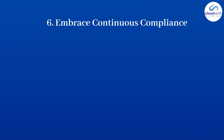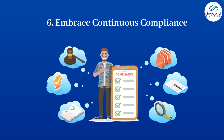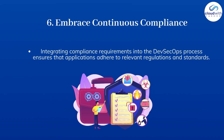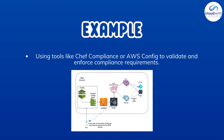Number 6: Embrace continuous compliance. Integrating compliance requirements into the DevSecOps process ensures that applications adhere to relevant regulations and standards. For example, using tools like Chef Compliance or AWS Config to validate and enforce compliance requirements.